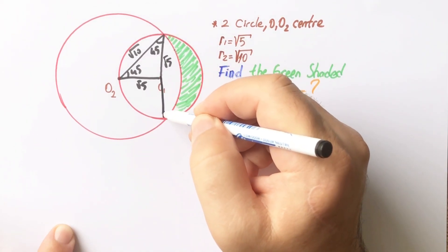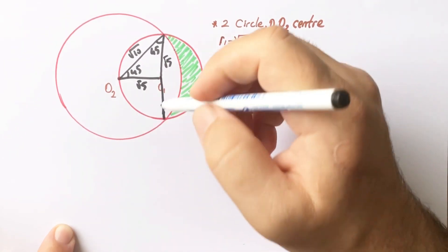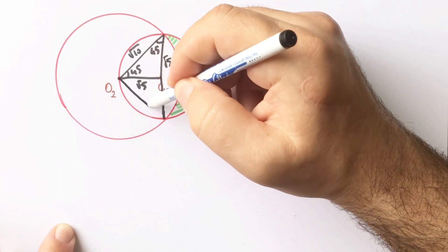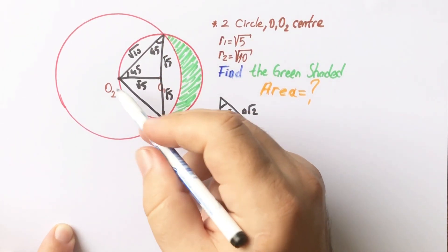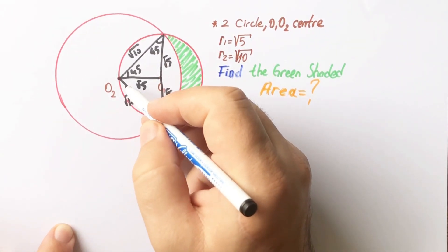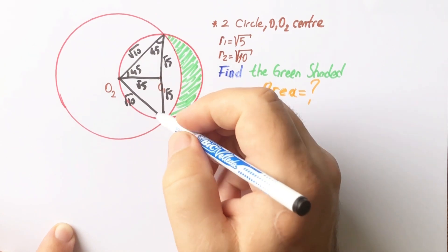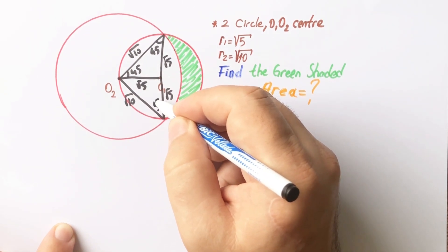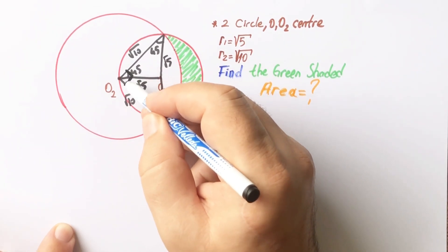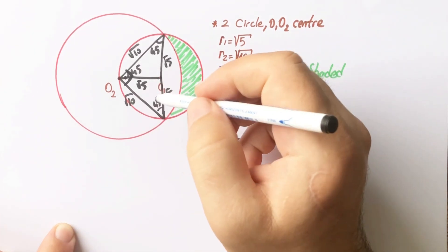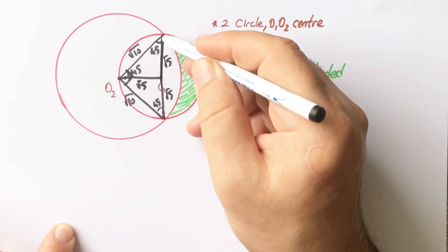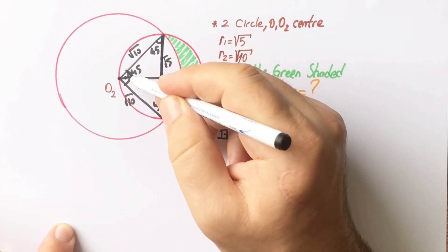Let's connect here. This length is also the radius of the small circle, and this length is the radius of the large circle. So here must be 45 degrees, and this angle is 90 degrees. That means this line must be linear because it subtends 90 degrees.